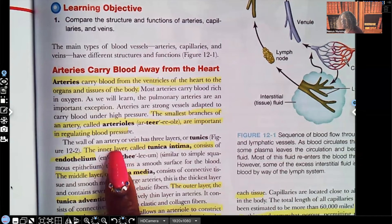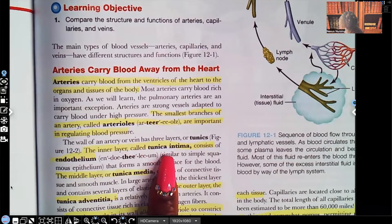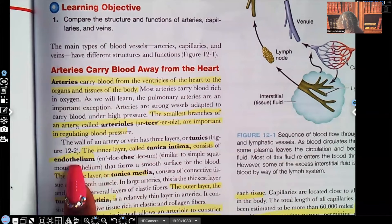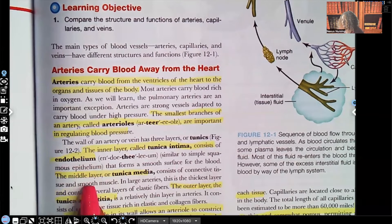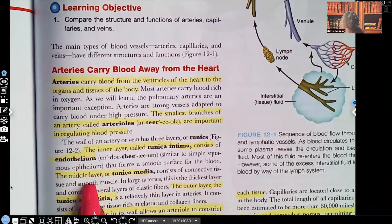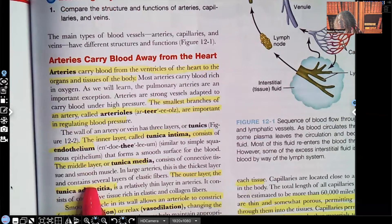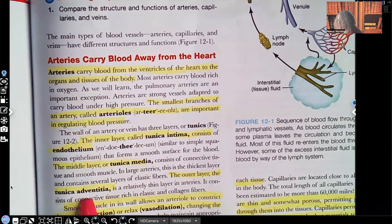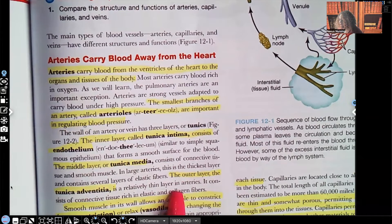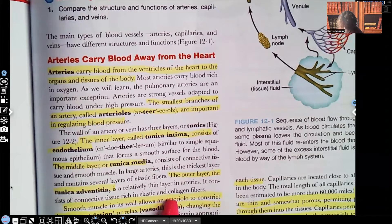Now, the wall of the artery or vein has three layers, also known as tunics. The inner layer, that's what's known as a tunica intima. That's the inner lining. It consists of the endothelium. When you see endo, endothelium, that means it's most inside, inner lining. Middle layer, that's the tunica media. And that consists of connective tissue and smooth muscle. And then you have your outer layer. That is your tunica adventitia. That's a relatively thin layer in the arteries. And that also has connective tissue that's rich in elastin and collagen fibers.